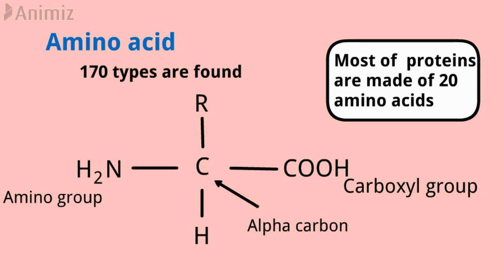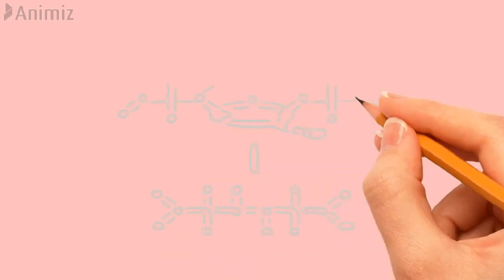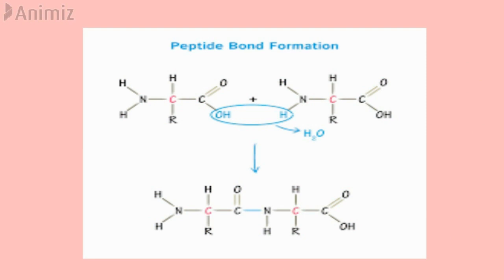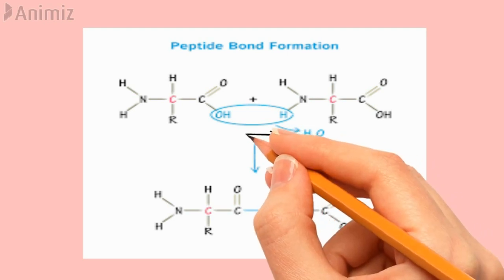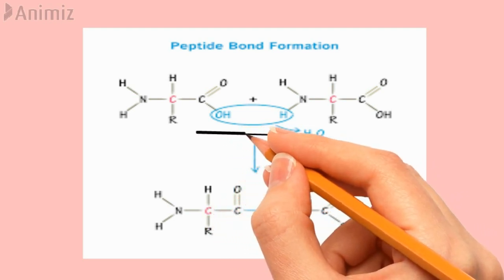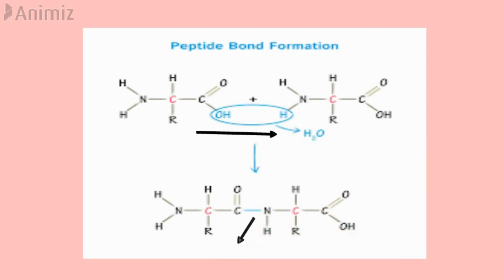Amino acids mainly differ due to the type and nature of the R group. Amino acids are linked together to form polypeptide proteins. The amino group of one amino acid may react with the carboxyl group of another, releasing a water molecule. The linkage between the hydroxyl of the carboxyl group of one amino acid and the hydrogen of the amino group of another releases a water molecule, and the carbon-nitrogen link forms a bond called a peptide bond.